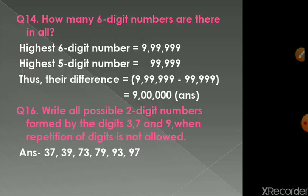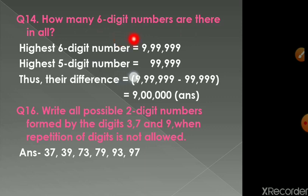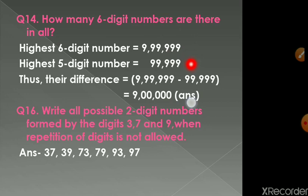Question number 14: how many six-digit numbers are there in all, that is from 1 lakh to 9 lakh 99999? The trick is: write the highest six-digit number, which is 9 lakh 99999, and the highest five-digit number, which is 99999, then subtract. The answer is nine lakh six-digit numbers in all.